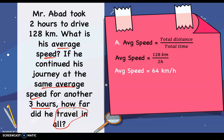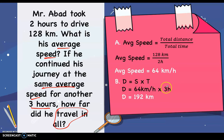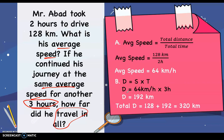To find the distance for the additional 3 hours, we use distance equals speed times time: 64 kilometers per hour times 3 hours equals 192 kilometers. But the question asks how far he traveled in all. So we add the initial 128 kilometers to 192 kilometers, giving 320 kilometers. Therefore, Mr. Abad traveled 320 kilometers altogether.